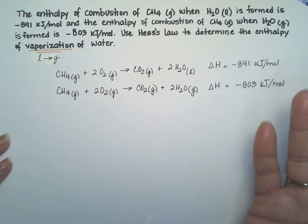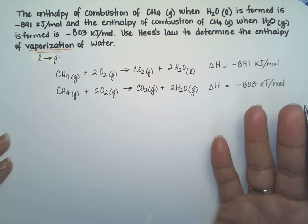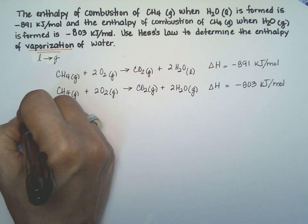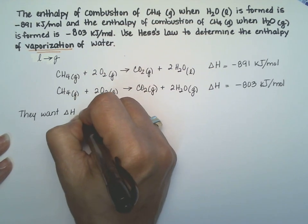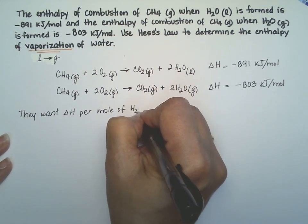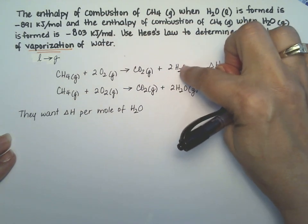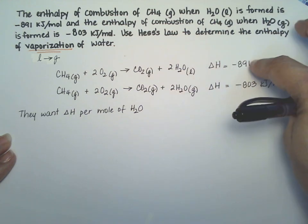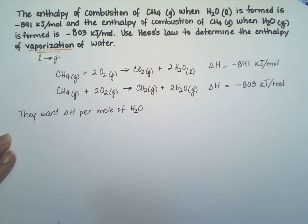Now the other thing is that they want us to calculate the enthalpy for one mole, per mole. And that is important because if you notice, we actually form in both of these reactions two moles of water. So we're not going to need the two moles, this number here is for two moles. We're going to need to convert that to one mole of water.